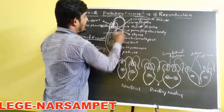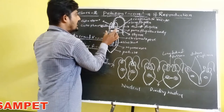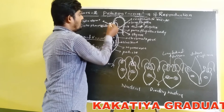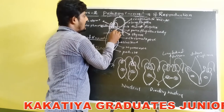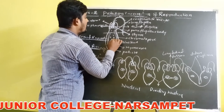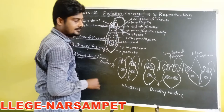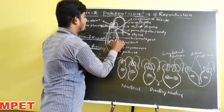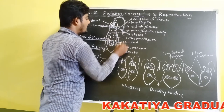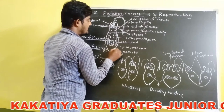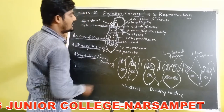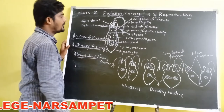At the anterior part of Euglena, there is a pair of flagella, cytostome, cytopharynx, paraflagellar body, contractile vacuole, and a stigma. At the centre of the body, a nucleus is present, and surrounding the nucleus, chromatophores are present. Externally, the body is covered by a pellicle. This is the structure of Euglena.